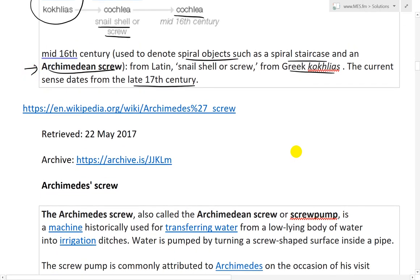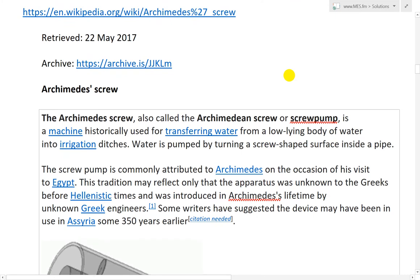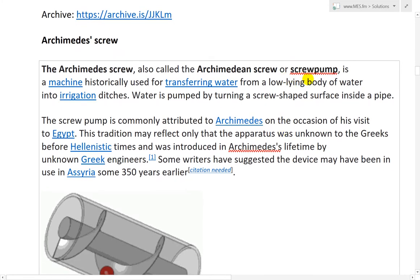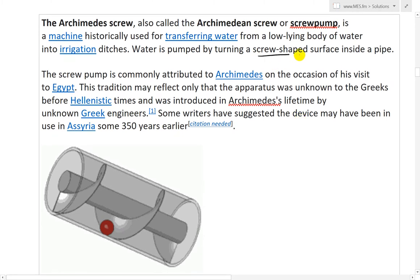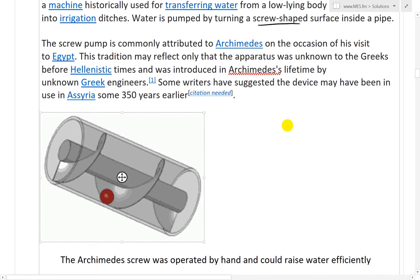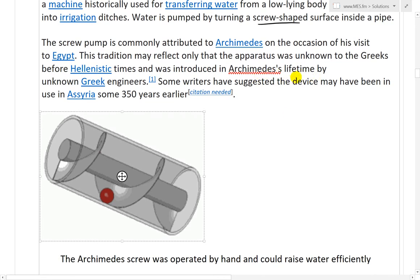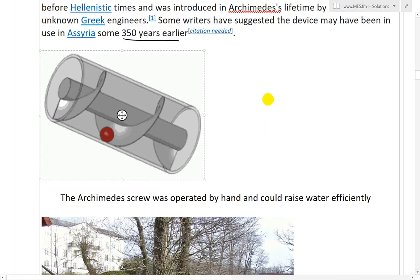So from Latin snail shell or screw from Greek, Kochlias the current sense dates from the late 17th century later, so the 17th century onwards became the part of the ear but before that it was just for spiral objects that looked like a snail. And then yeah, so this Archimedean screw I haven't heard of it before so I searched it up. Here's from Wikipedia the Archimedes screw also called the Archimedean screw or screw pump is a machine historically used for transferring water from a low lying body of water into irrigation ditches.